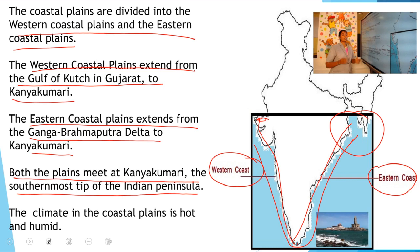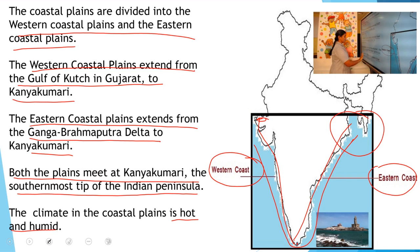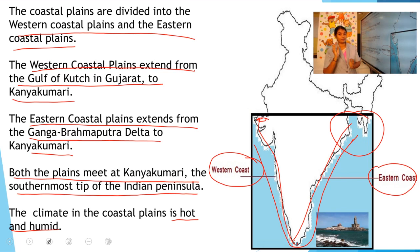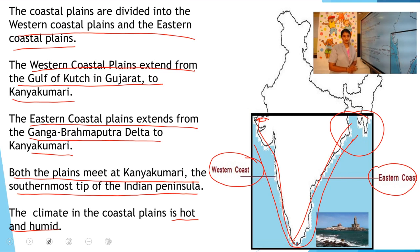Do you know what is the climate of these coastal plains? The climate is hot and humid. What do you mean by humid? The amount of water vapour in the atmosphere will be high. In another way, the moisture content of the air will be high. So the climate of the coastal plains is hot and humid.